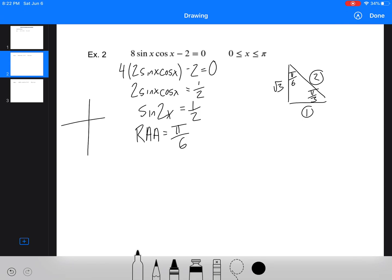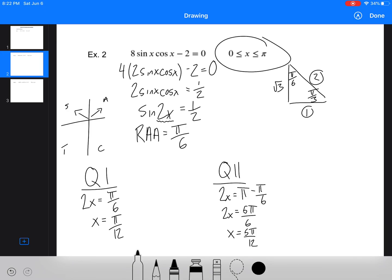So we're going to have 2x. Sine x is positive in quadrants 1 and 2. So we know our quadrant 1. Normally we'd write x equals. We're going to have to write 2x equals. 2x equals π/6. That means that x is equal to π/12. Okay, in quadrant 2, we have 2x equals π minus π/6. So 2x equals 5π/6, and x is equal to 5π/12. Now this question is between 0 and π. So we're done.